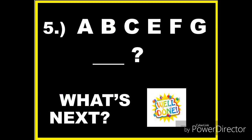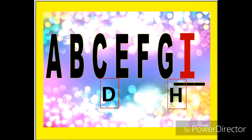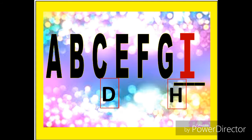Now let's have the next one: A, B, C, E, F, G. What's next? Let's observe — A, B, C, the missing letter is D. E, F, G, the missing letter is H. The pattern is: after 3 consecutive letters, there is 1 missing letter. So the next term is I.